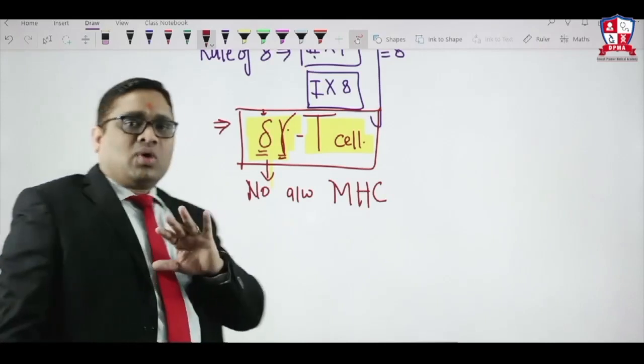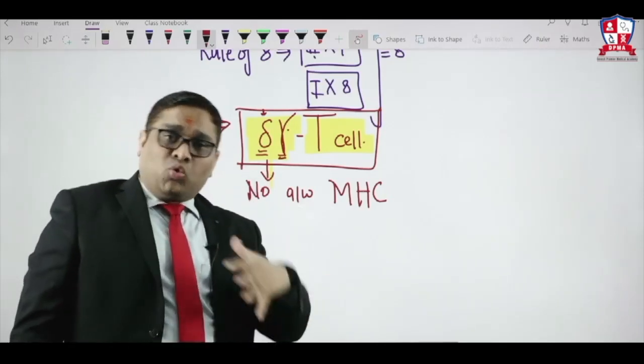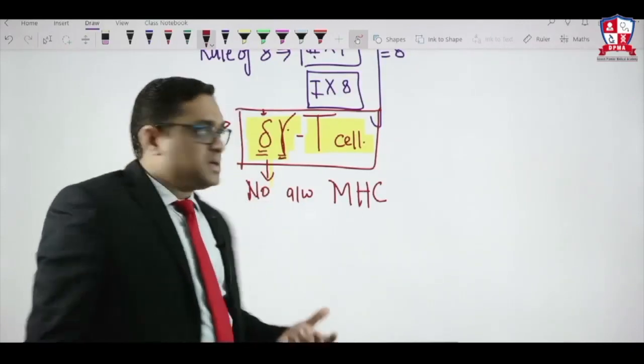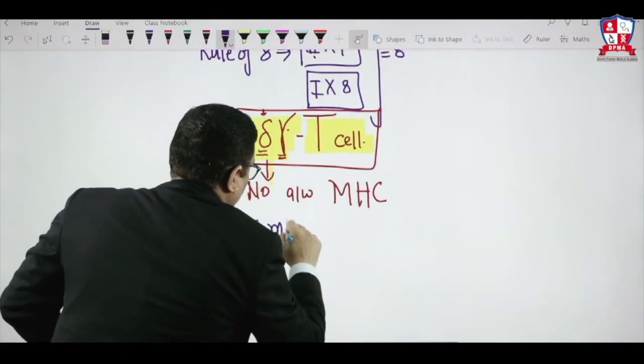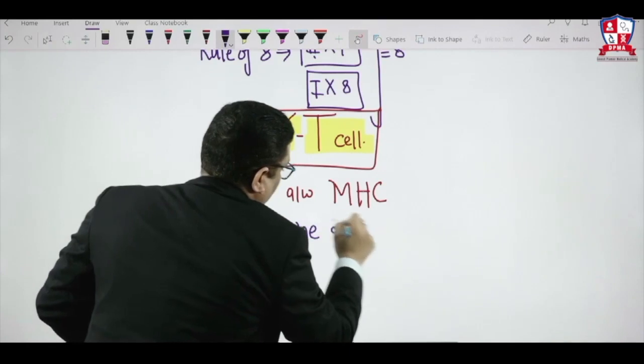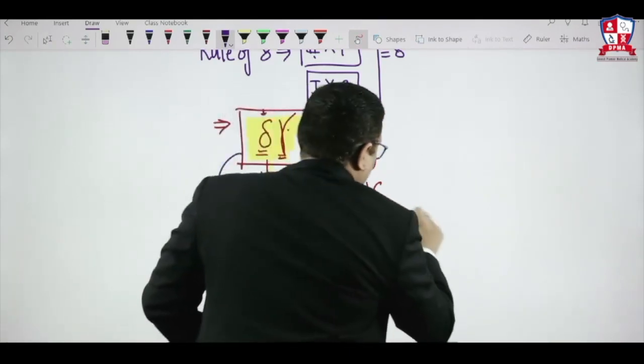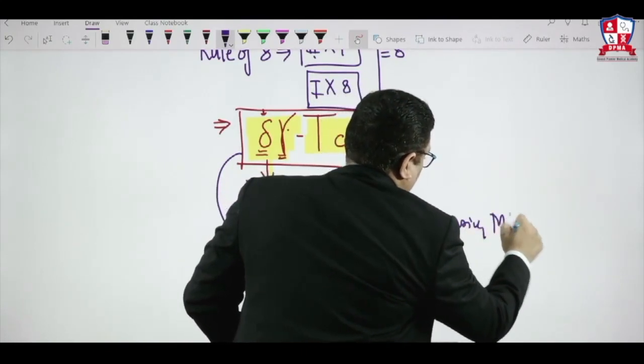So these are having no association with MHC molecule. Without using MHC complexes they will combine with antigen. So now what is their function? They will combine with antigen without using MHC complexes.